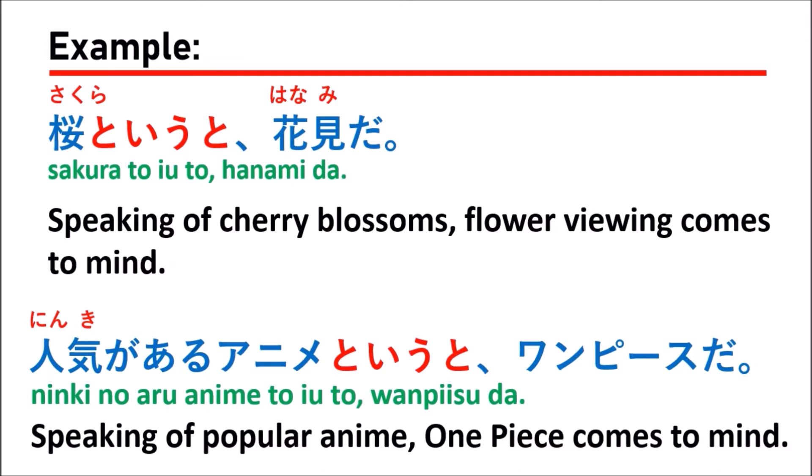For the second sentence, they say 「人気があるアニメと言うとワンピース」(ninki ga aru anime to yuto, One Piece), which means: when you're talking about popular anime, you think of One Piece. One Piece is the name of a very famous anime story in Japan. If you talk about anime, many Japanese people think of One Piece — it's very famous and many people know it.